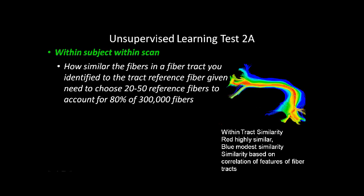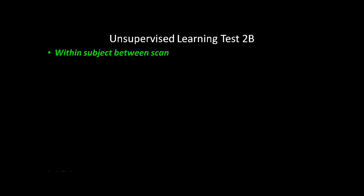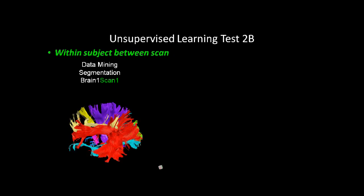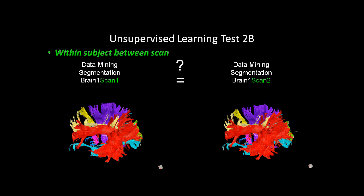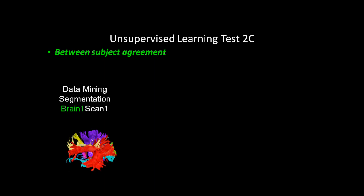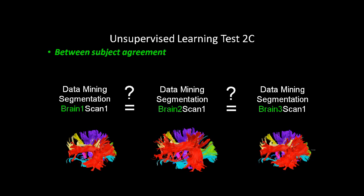In the unsupervised learning test two A, we do a within subject scan and determine how similar the fibers in your fiber track are to an identified track reference fiber, given the need to choose 20 to 50 reference fibers to account for 80% of the 300,000 fibers. The diagram shows fibers colored as to their similarity to a sample reference track. Test two B is a within subject between scan — can you map your reference fibers from scan one and predict on the same subject what the data will look like in scan two? The between subject agreement is test two C: looking at the data mining on one subject, can you map that to the two remaining subjects within the data set?